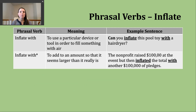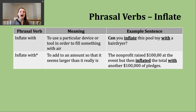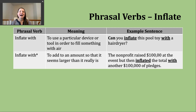Now we're going to look at a phrasal verb — inflate with. It has a couple of meanings. The first way you might hear inflate with used is to mean you're using some particular device, which comes after the preposition with, in order to put air into something. An example might be: can you inflate this pool toy with a hairdryer?